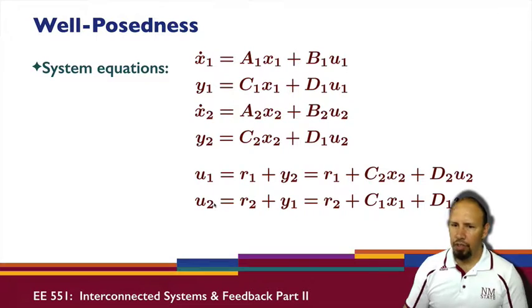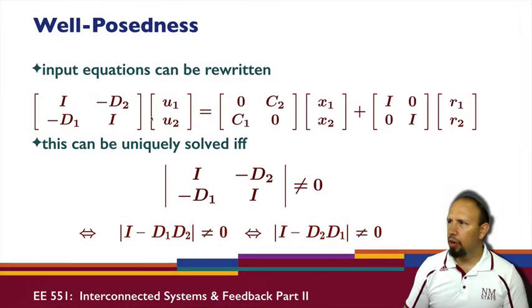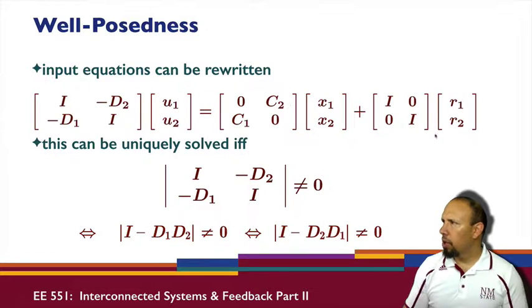We can solve - we can take these guys over to the other side and solve and factor out U1 and U2. And I get this matrix then, and so I can get control signals U1 and U2 from all of this if this matrix is invertible. So this can be uniquely solved if this matrix is invertible. Turns out if this matrix is not invertible, then our system is said to be not well-posed.